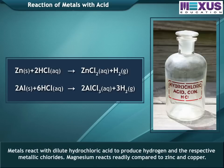Metals react with dilute hydrochloric acid to produce hydrogen and their respective metallic chlorides. Magnesium reacts more readily compared to zinc and copper.